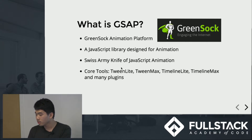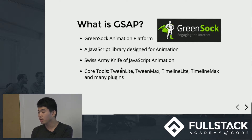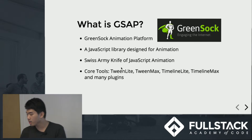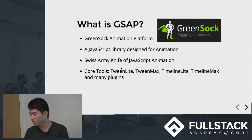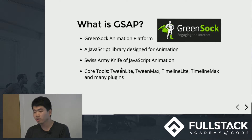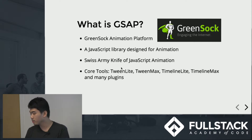Some of the core tools from the GSAP library include TweenLite, TweenMax, TimelineLite, and TimelineMax, and many plugins. Today in the later demo, I will show you how to use the TimelineLite library to create animation.